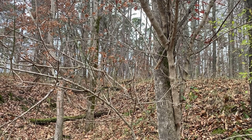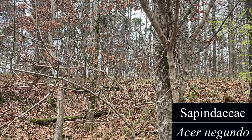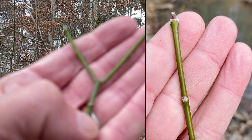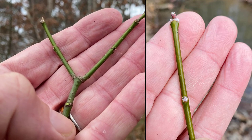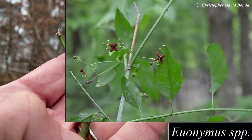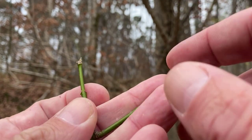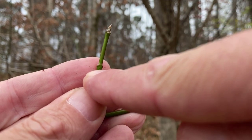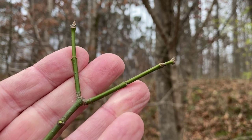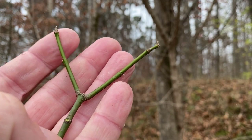Here's a common tree species found in virtually every woods in Illinois — box elder. Box elder is a type of maple, Acer negundo, in the Sapindaceae by most authorities. Really helpful for identifying this tree is looking at the twigs. This twig is green — not many trees have green twigs in the dormant season; Euonymus atropurpureus and sassafras are exceptions. We can also see the opposite leaf scars directly across from each other on the stem, confirming an opposite leaf arrangement — buck made SCAT, the 'M' for maple. Sometimes the branches are opposite as well, so you can definitely recognize that feature.